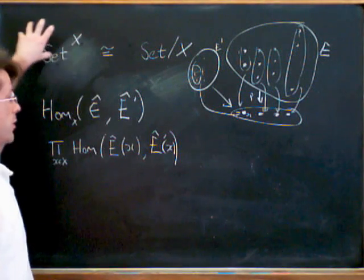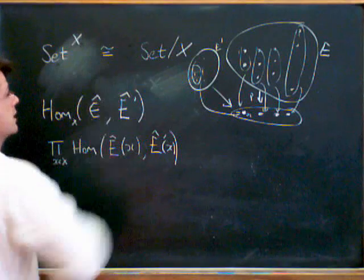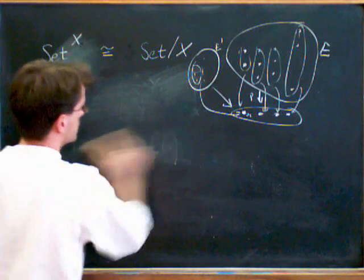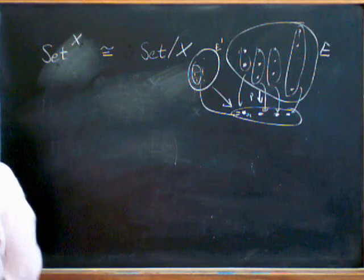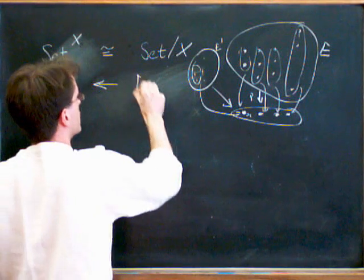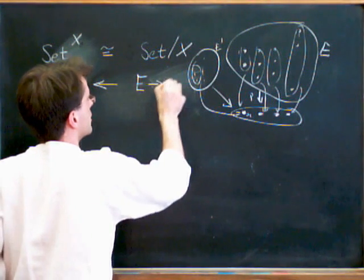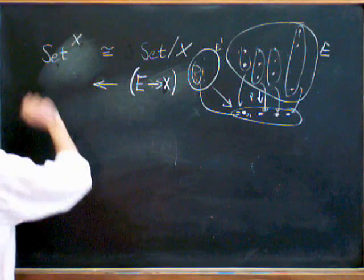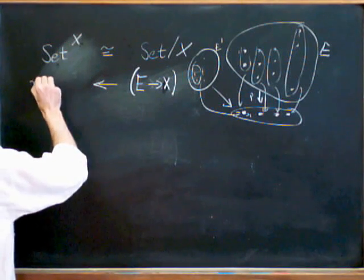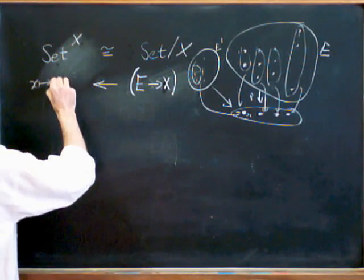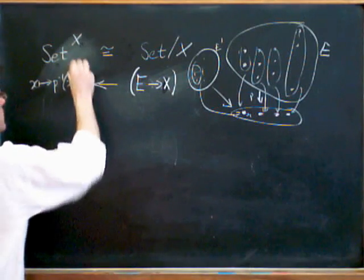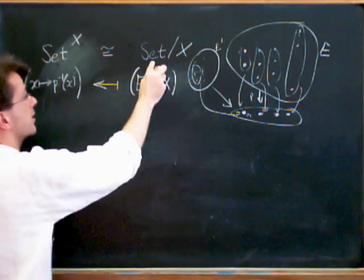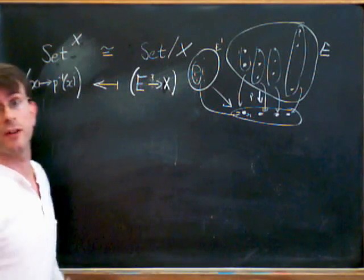So that corresponds under the correspondence I'm just about to write down between these two things. So we've seen how to get in one direction. So we send E to X goes to x goes to p inverse of x, so that sends something in the slice category to something in this functor category.